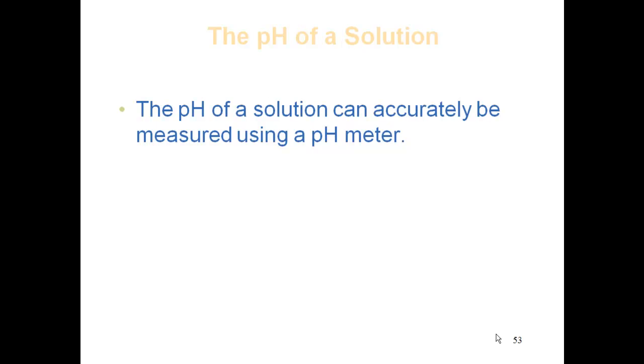The pH of a solution can accurately be measured using a pH meter. If you do a laboratory, you usually have a pH meter that you will use to measure the solution, figure out the pH, and if you want to calculate that concentration, we can use the formula easily to calculate that.